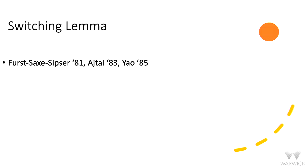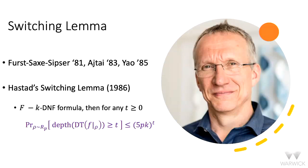Saxon and Sipser pioneered the use of the switching lemma as a powerful technique to understand AC0 circuits. This was further improved by Ajtai and Yao. Finally, Johan Hastad gave the switching lemma as we know it today: if F is a DNF formula with bottom fan-in k, and you hit it with a random p-restriction, then with very high probability it simplifies to a decision tree of very low depth. The probability that it requires depth more than T is exponentially small in T, with base of the exponent 5pk.